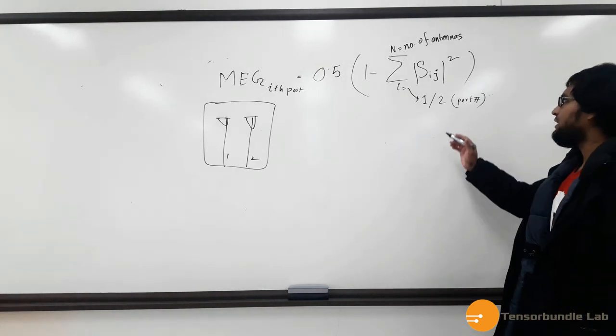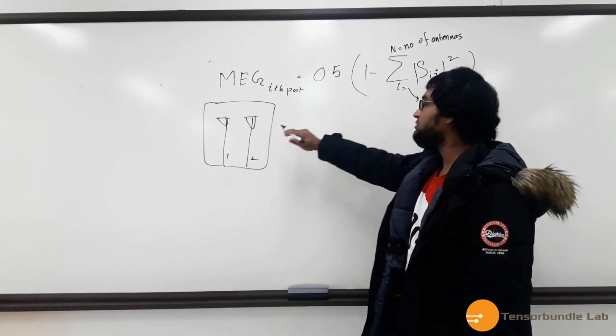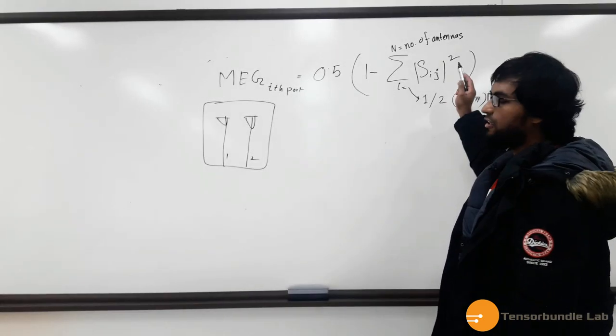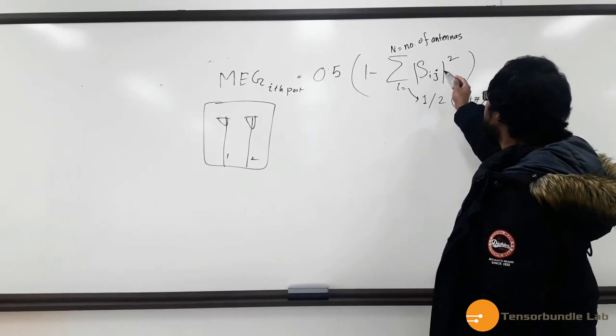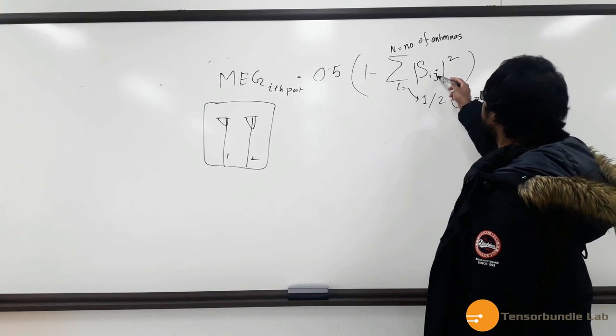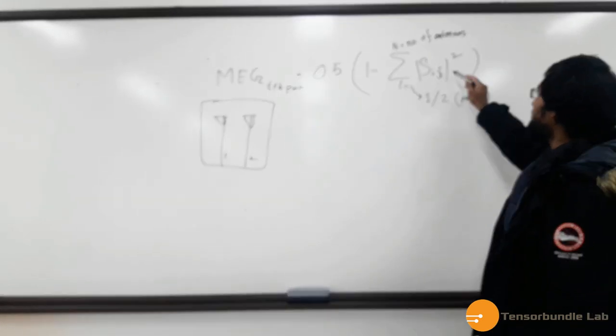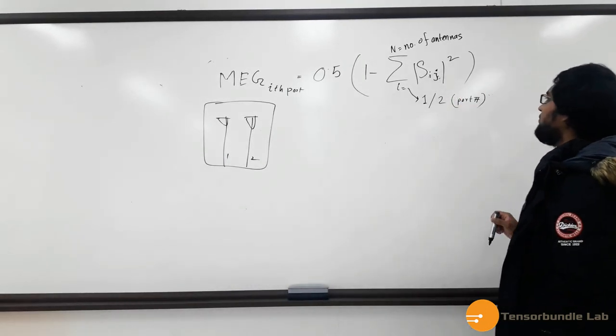So whenever you are calculating the MEG 1, for example, for the first port, then you take S11, S12. And whenever you are calculating the MEG for the second port, you will take S21, S22.